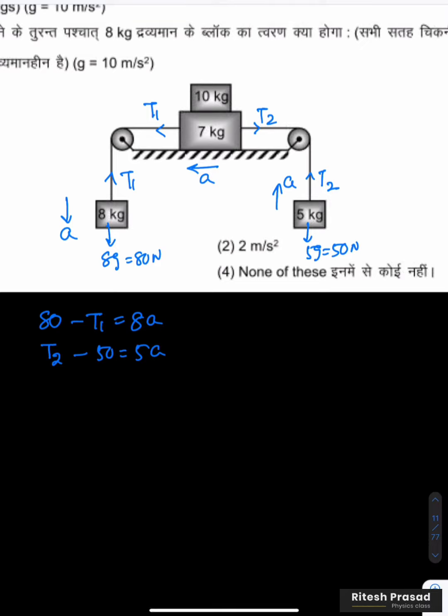So both solve. 80 minus 50 is equal to 13a. So 80 minus 50, 30 minus T1 plus T2 is equal to 13a.